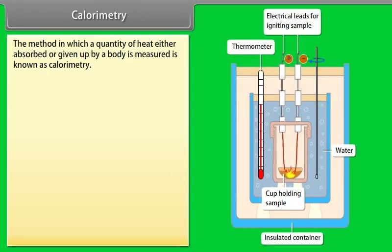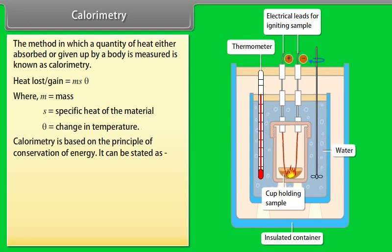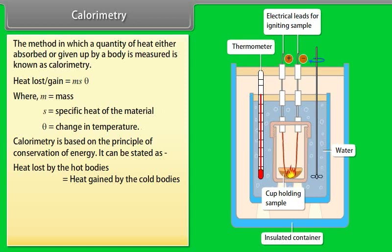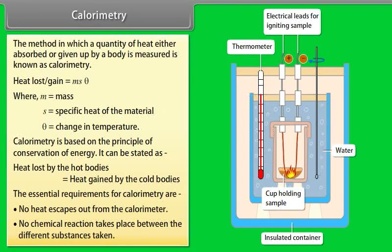Calorimetry: The method in which the quantity of heat either absorbed or given up by a body is measured is known as calorimetry. Heat loss or gain = MsΔθ, where M is mass, s is specific heat, and θ is change in temperature. Calorimetry is based on the principle of conservation of energy: heat lost by hot bodies equals heat gained by cold bodies. Essential requirements are that no heat escapes from the calorimeter and no chemical reactions occur between substances.